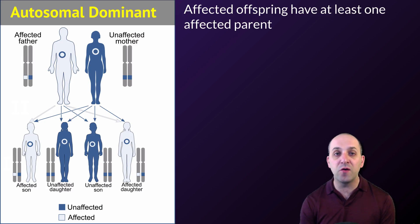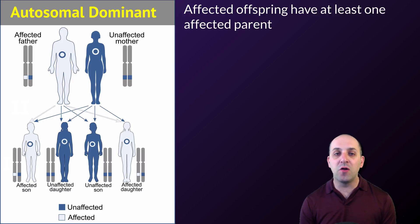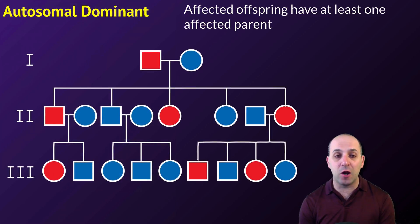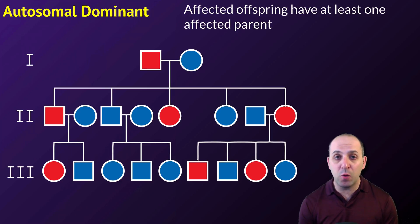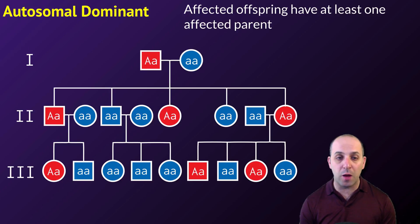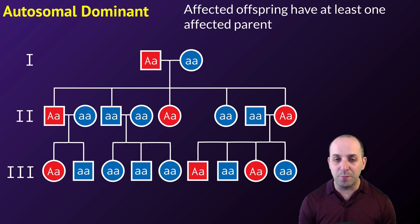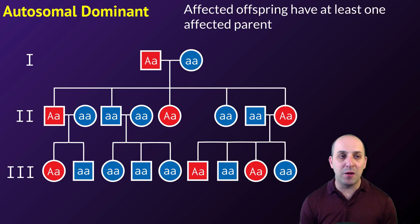Let's talk about a couple of inheritance patterns. First, we're going to look at autosomal dominant traits. When we look at an autosomal dominant trait, we know it's inherited autosomal dominant because affected offspring always have at least one affected parent. Looking at this pedigree example, I'll put the genotype letters in so you can see what's happening — you never have an affected offspring who doesn't have at least one affected parent. That's the key clue for autosomal dominant inheritance.